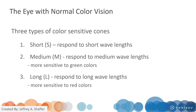Our eyes have three types of sensitive cones, and each cone is responsible for a specific wavelength range from the visible band of light. We have short, medium, and long cones, where medium cones are more sensitive to green colors and long cones are more sensitive to red colors.